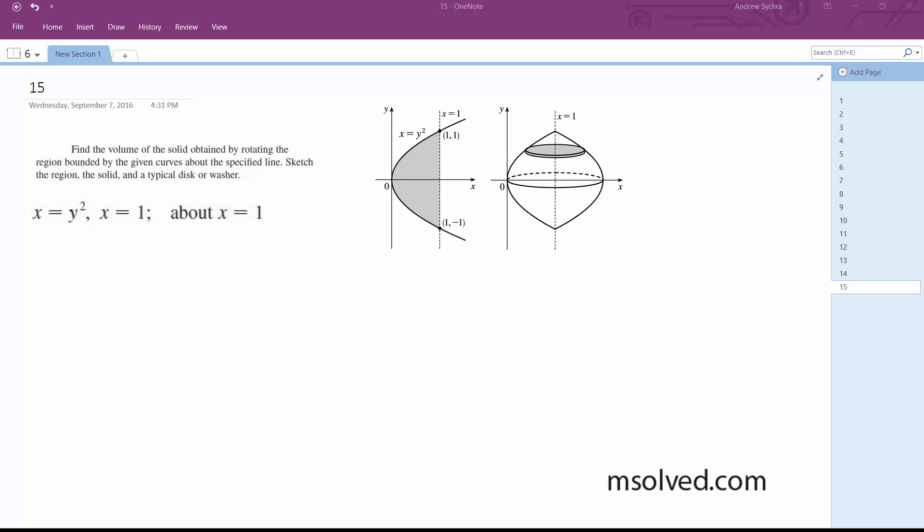Alright, so in terms of y, we're going to go from... this originally goes from y equals negative 1 to 1, but because it cancels out, we're just going to take it from 0 to 1, and I'll show you what I mean.